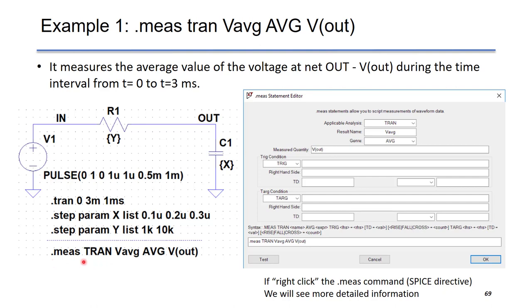.meas tran, means transient, Vavg, that's the name of your variable or measurement. AVG means you want to measure the average value. Vout is the measured quantity.